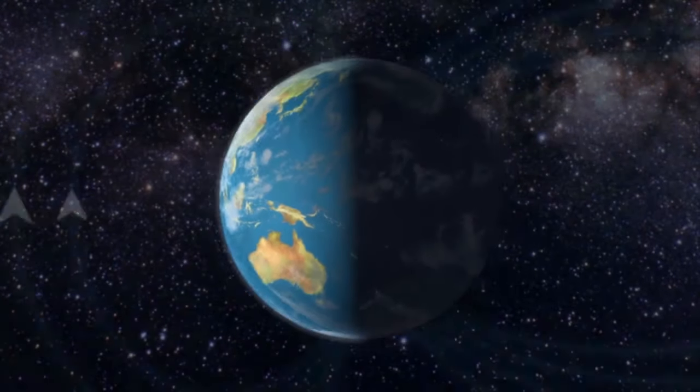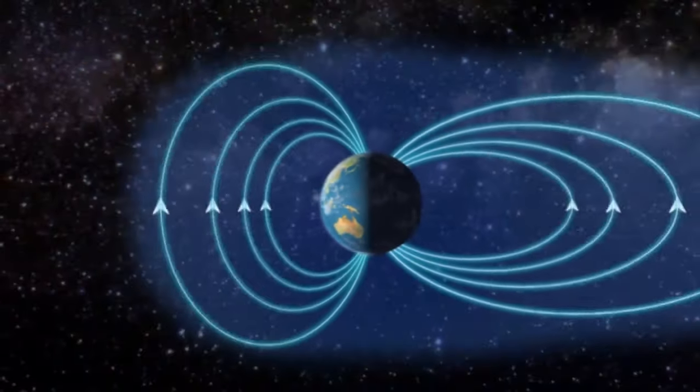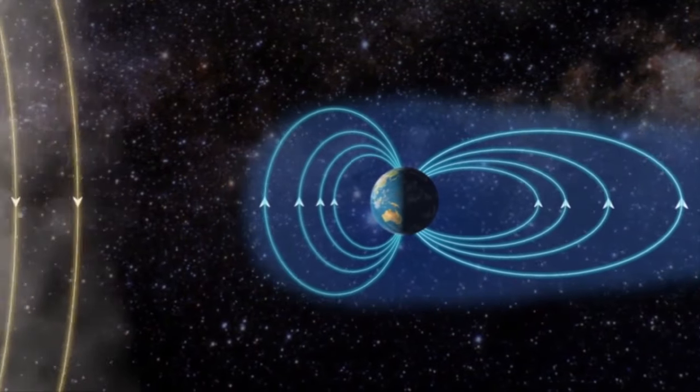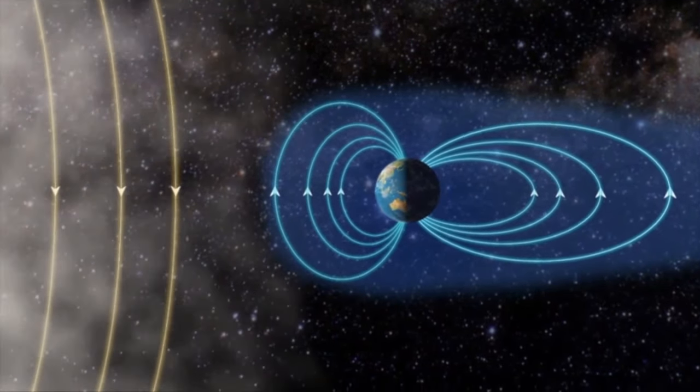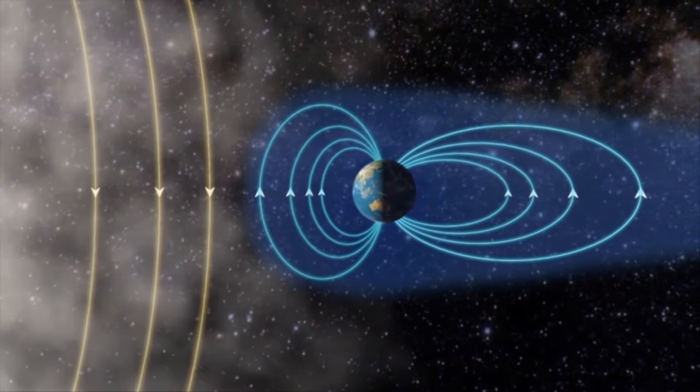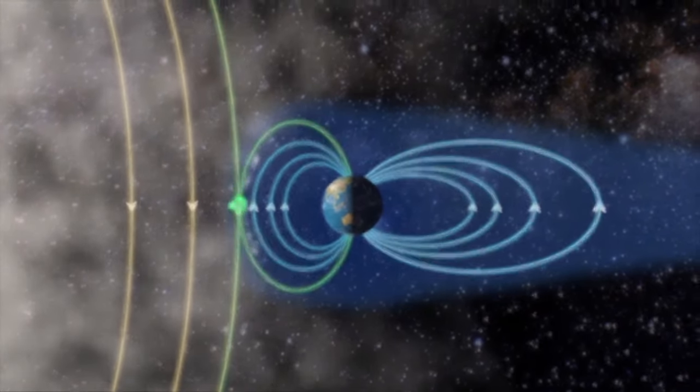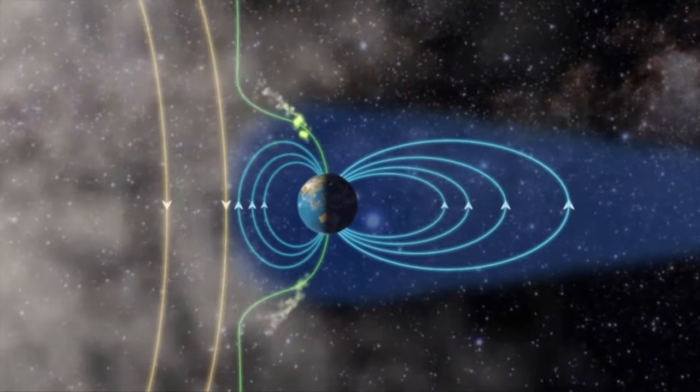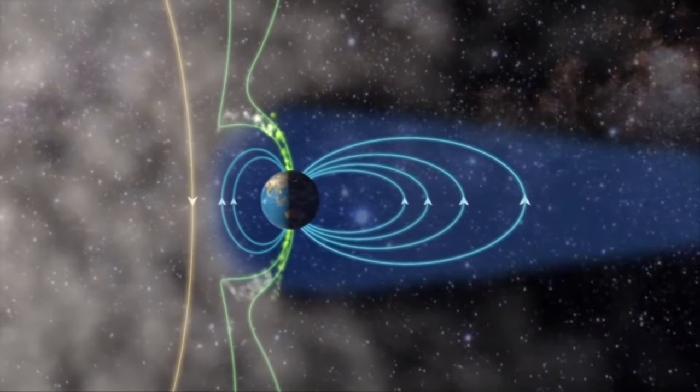When the solar storm reaches Earth, something strange happens. It's as if it is deflected by an invisible shield, the Earth's magnetic field, the magnetosphere. The magnetic fields couple together and create a funnel for the gas streams down on the daylight side of the pole.